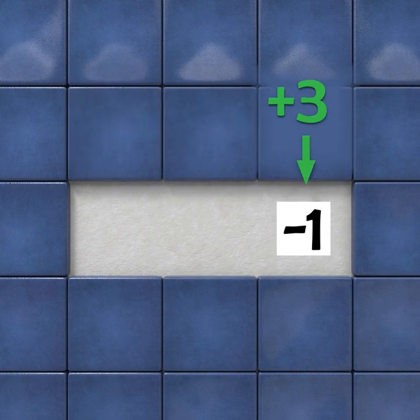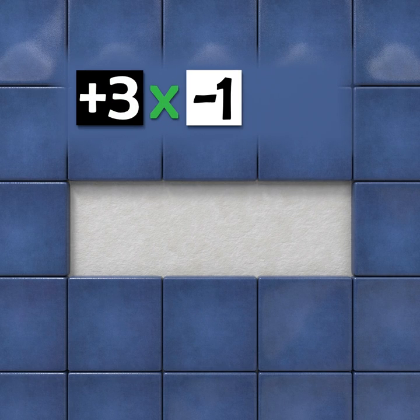If we combine three of these holes, we have 3 times negative 1, which gives us negative 3.